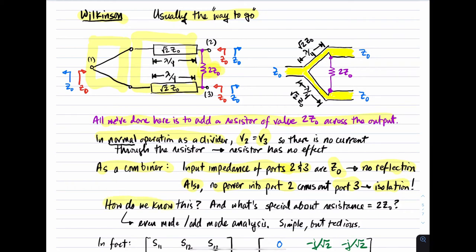You can fairly ask how we know this, and what's special about the resistance 2Z₀. I'm not going to work that out here, but it's not too hard to figure out. The method to use is called even-odd mode analysis. Even-odd mode analysis is very simple but a little tedious — it would take at least half an hour to walk through how you decompose this thing into equivalent circuits representing the even and odd modes, and then derive the performance. For what we're doing here, it's fine to trust that adding a resistor of value 2Z₀ accomplishes this.